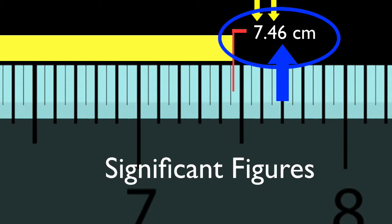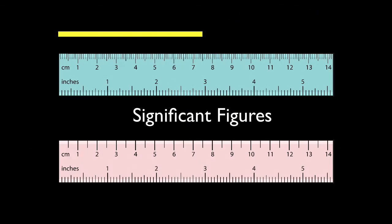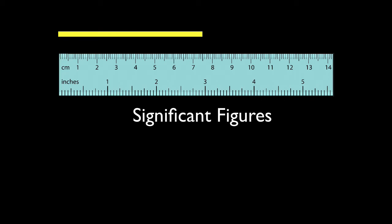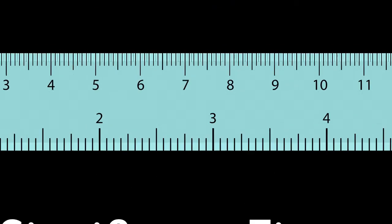We call them significant figures. They have meaning in the physical world. Which ruler can give you more significant figures? This one, the one that is more precise. It's also the one that's more expensive.